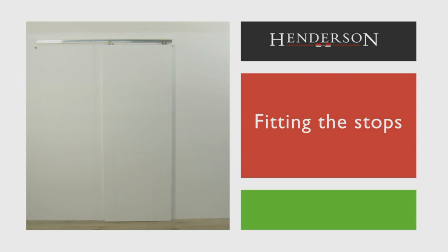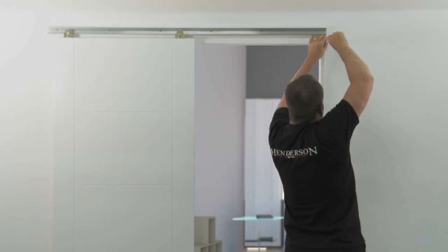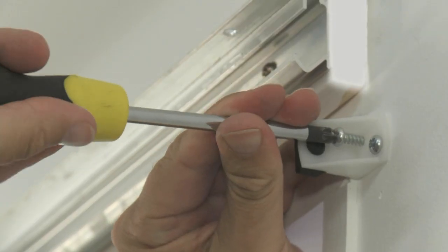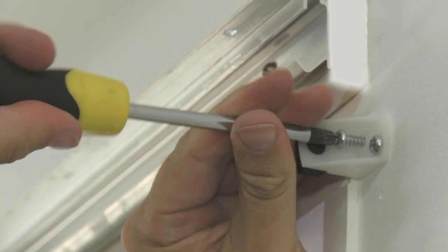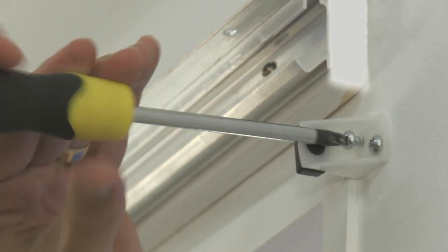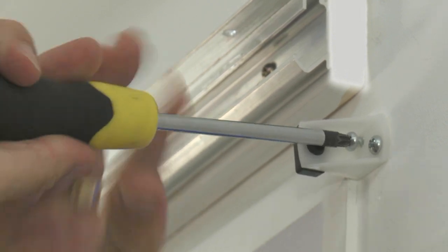Fitting the stops. Now we need to attach the stops so that the door doesn't run out of the track in operation. Locate a suitable position on the wall for the stops and fix them into place.